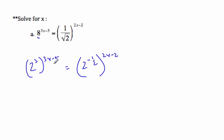So now, my exponent rules say I multiply these, so this is 2 to the 9x minus 15, equal to 2 to the negative x plus 1.